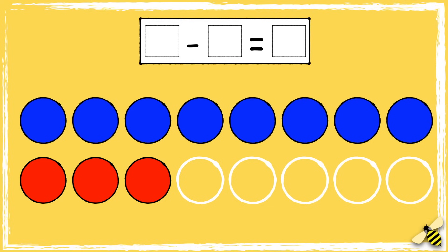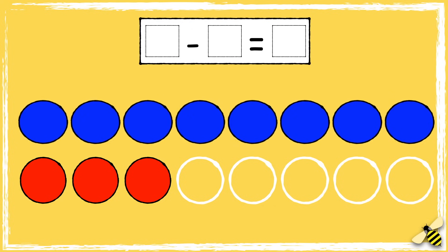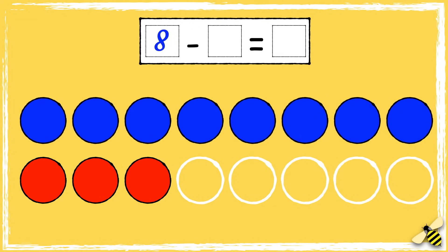Let's see how you got on. There are eight blue counters. So eight is the start of the number sentence. Then there are three red counters. So we're taking away three.